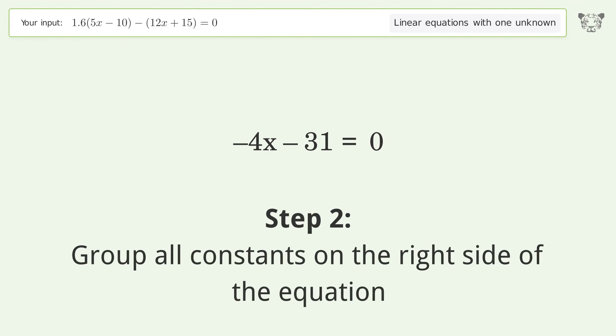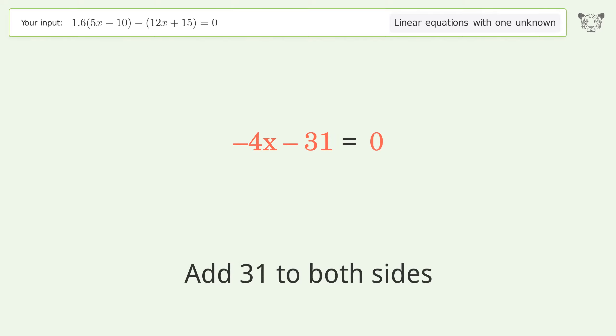Group all constants on the right side of the equation. Add 31 to both sides. Simplify the arithmetic.